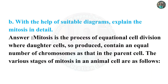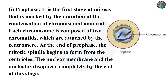B. With the help of suitable diagrams, explain mitosis in detail. Mitosis is the process of equational cell division where daughter cells are produced containing an equal number of chromosomes as in the parent cell. The stages of mitosis in an animal cell are as follows. A. Prophase: It is the first stage of mitosis, marked by the initiation of condensation of chromosomal material. Each chromosome is composed of two chromatids attached by the centromere. At the end of prophase the mitotic spindle begins to form from the centrioles, and the nuclear membrane and nucleolus disappear completely.